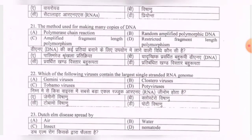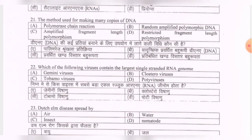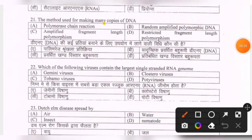Next question: the method used for making many copies of DNA — options are polymerase chain reaction (PCR), random amplified polymorphic DNA (RAPD), amplified fragment length polymorphism (AFLP), restriction fragment length polymorphism (RFLP). The correct option is the first one — polymerase chain reaction (PCR).